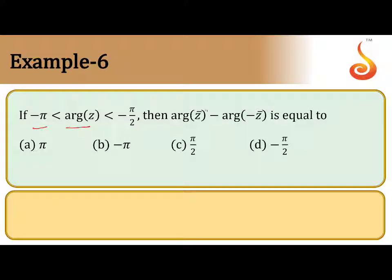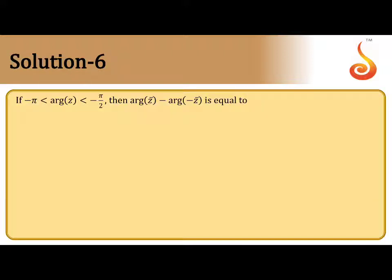We are given that z belongs to the third quadrant, and we need to find arg(z̄) minus arg(-z̄). Since z is in Q3, arg(z) lies between -π and -π/2. Let arg(z) = -(π - θ), so we can write arg(z) as -(π - θ).